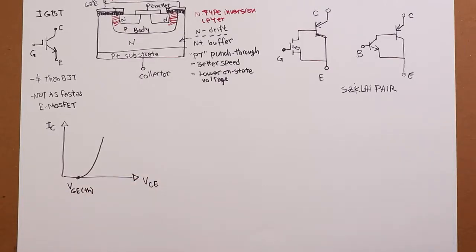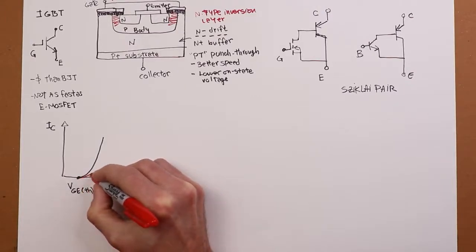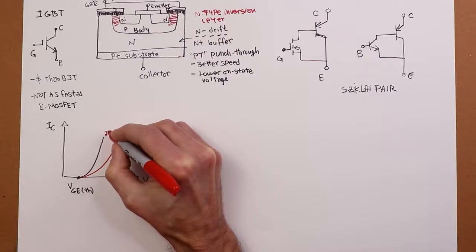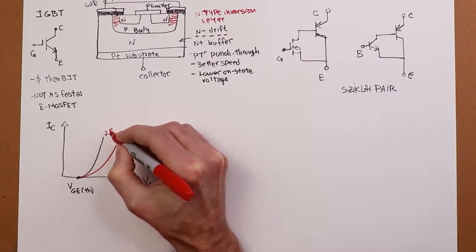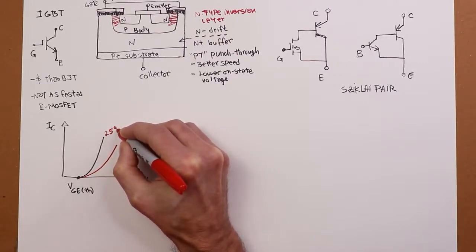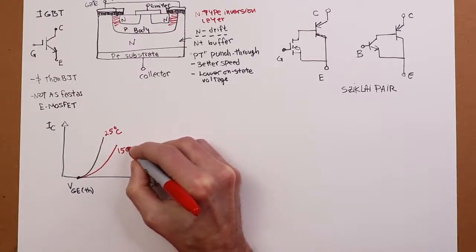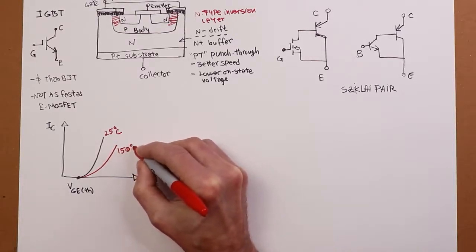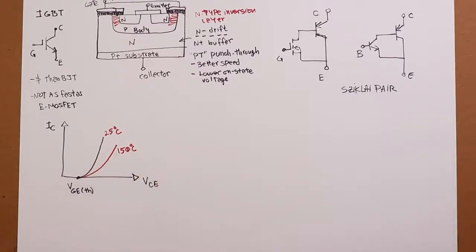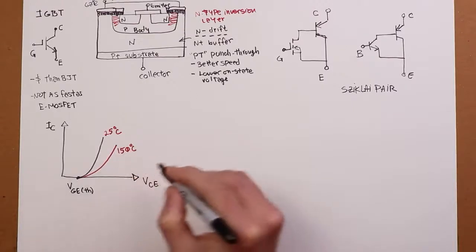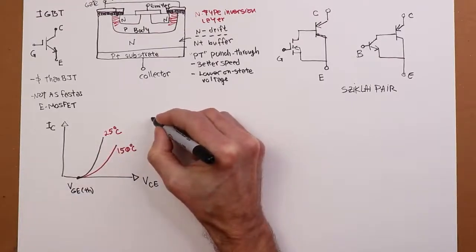We're going to see something like this. And that start point, instead of calling it VGS threshold, gate source, we call it VGE threshold, gate emitter. Now, if we change temperatures, if we say, oh, let's heat things up a little bit, curve kind of comes out like this. So this curve over here might be for a pretty standard 25 degrees centigrade. Maybe this red curve is 150 degrees centigrade. Now, that's really good. Power MOSFETs do this too.